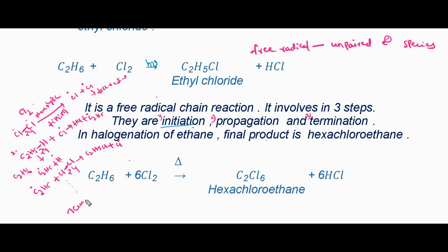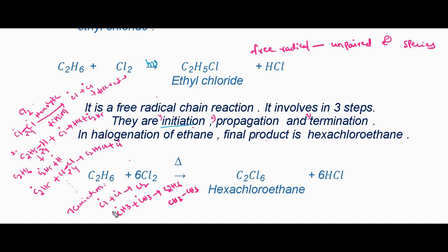The third step is termination. In the termination step, two chlorine radicals combine to form a chlorine molecule (Cl2), or two ethyl radicals combine to form ethane (C2H6, written as CH3–CH3). This is the chain termination process. The three steps in the free radical chain mechanism are: initiation, propagation, and termination.